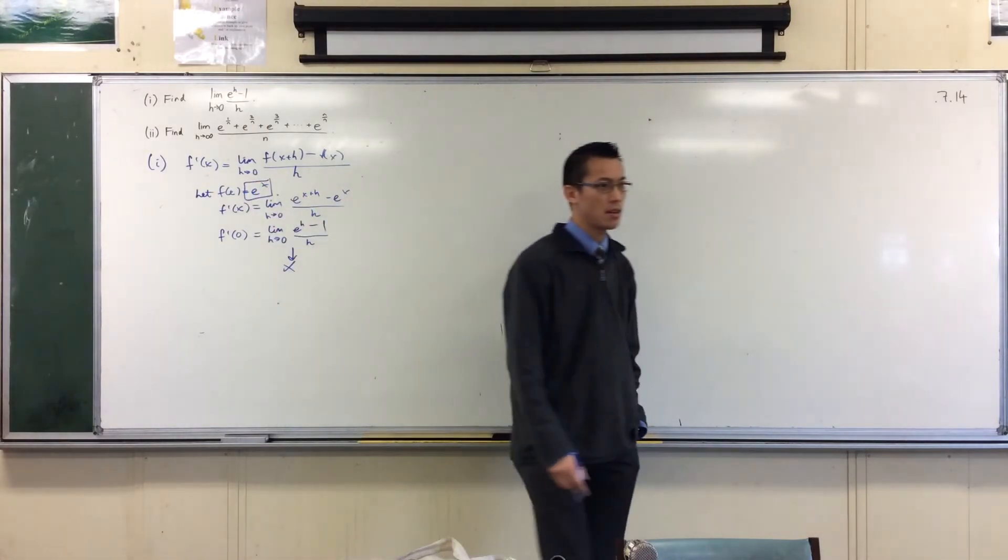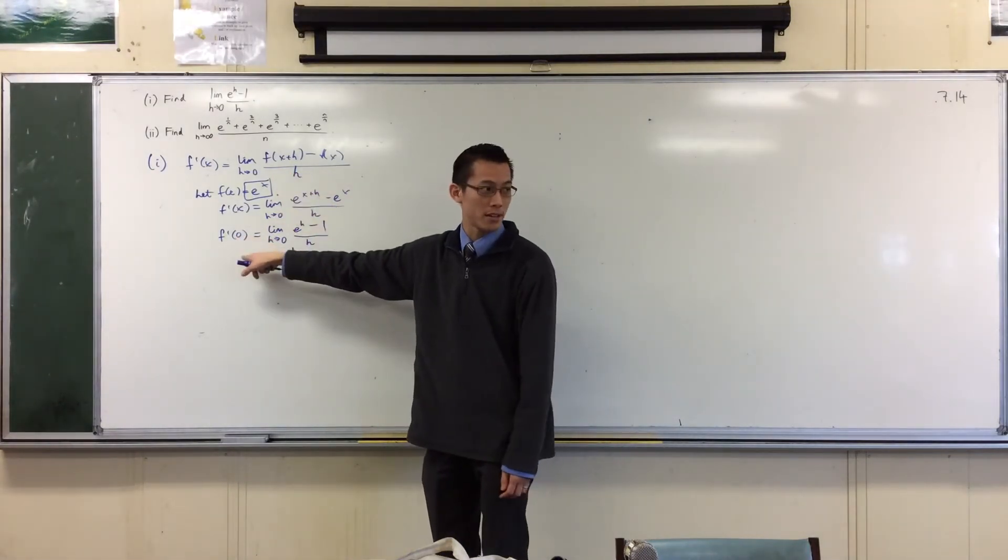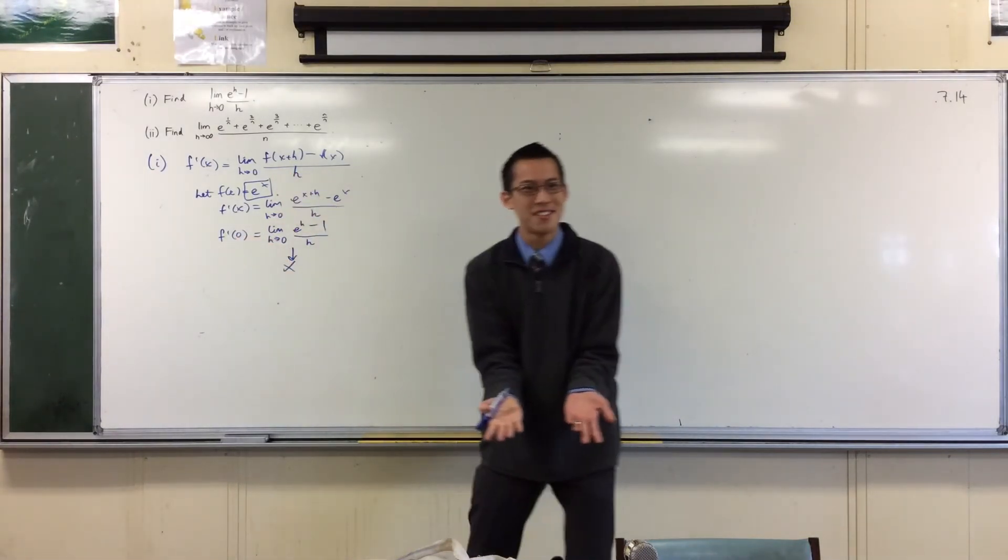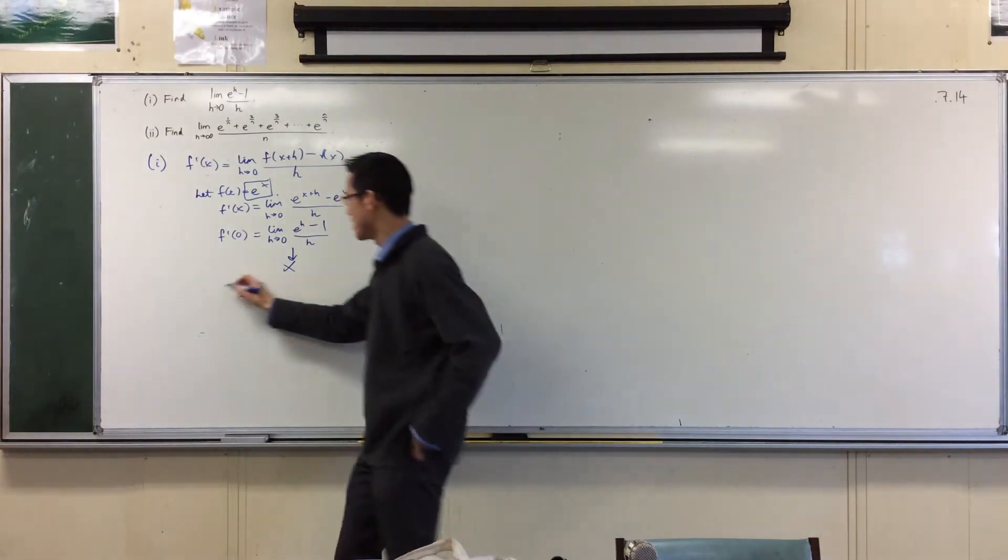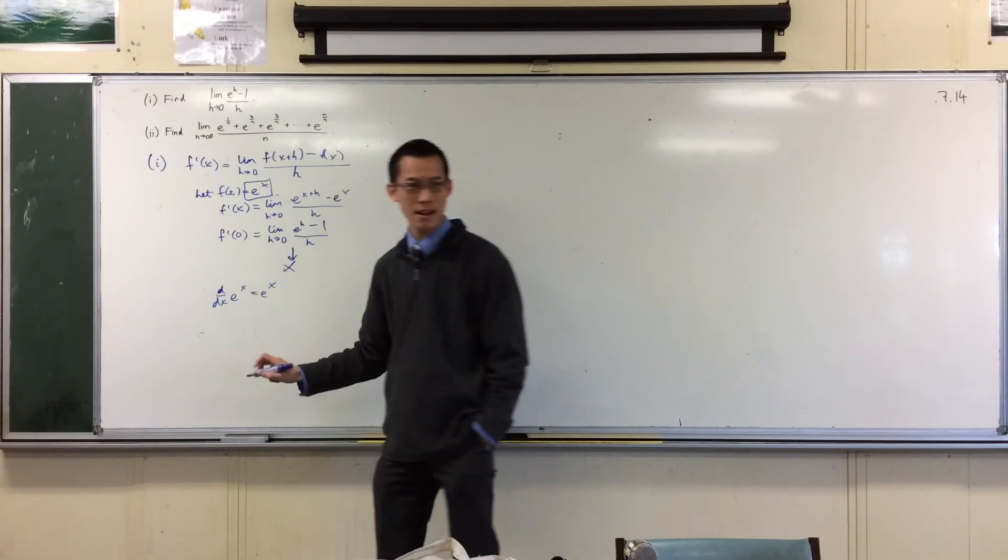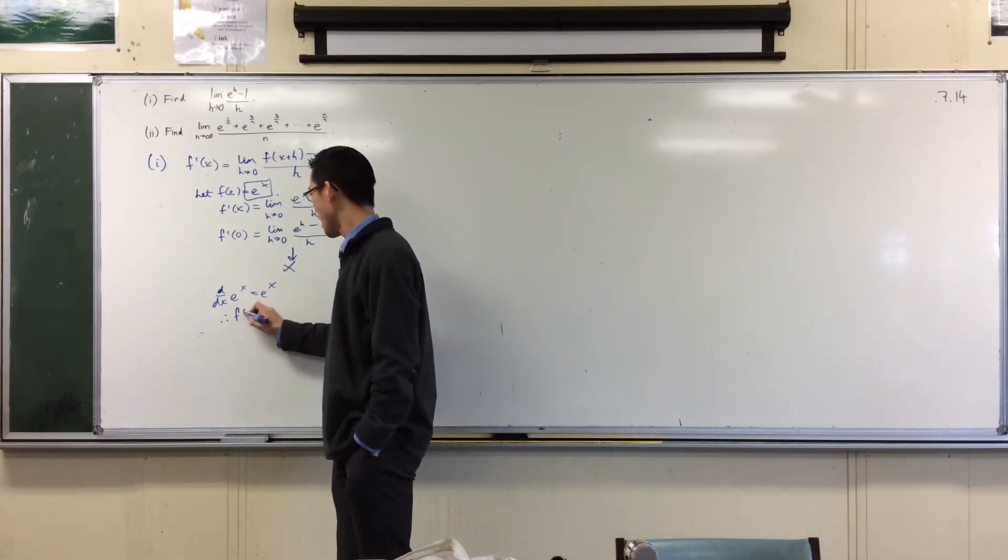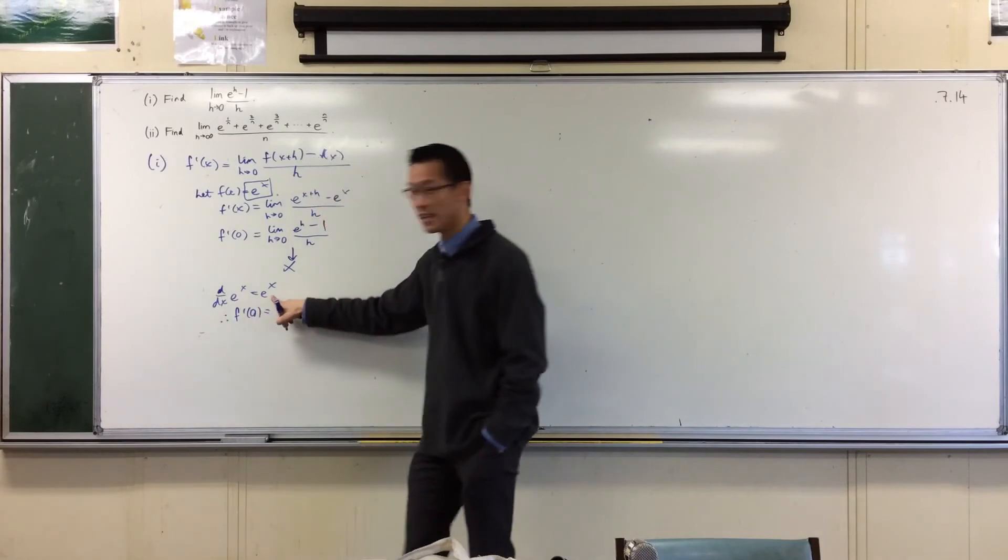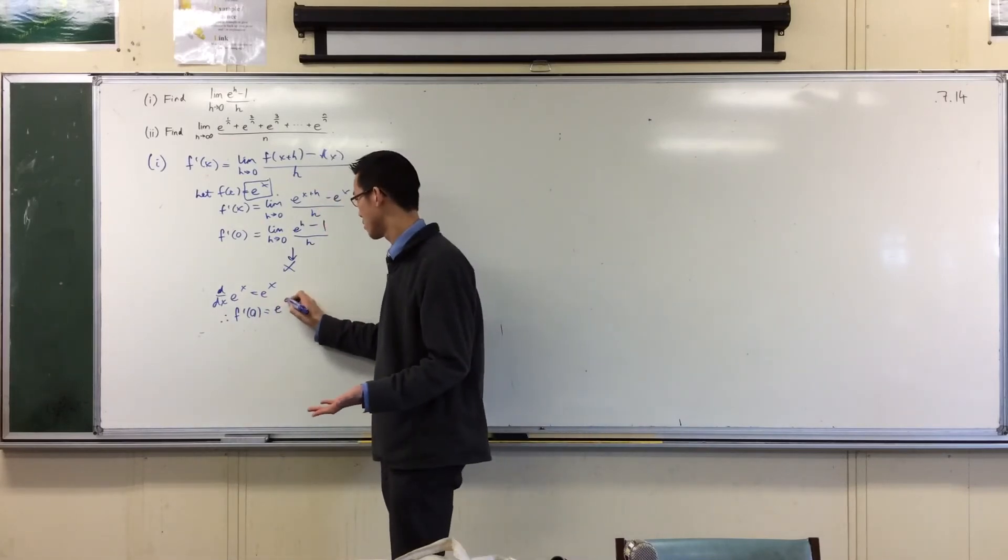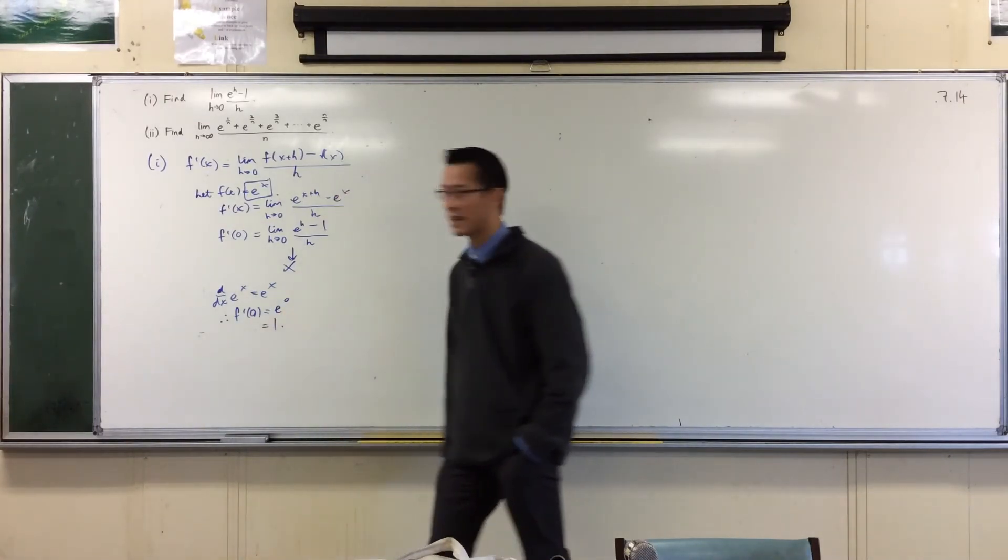I think the most important thing is remember, what is this function? It's e to the x, right, and we're considering the derivative of this function at a particular point. But you know what the derivative of e to the x is, right? The derivative of e to the x is e to the x. That's f dash. So therefore, f dash 0 should be this with x equals 0, which is 1.